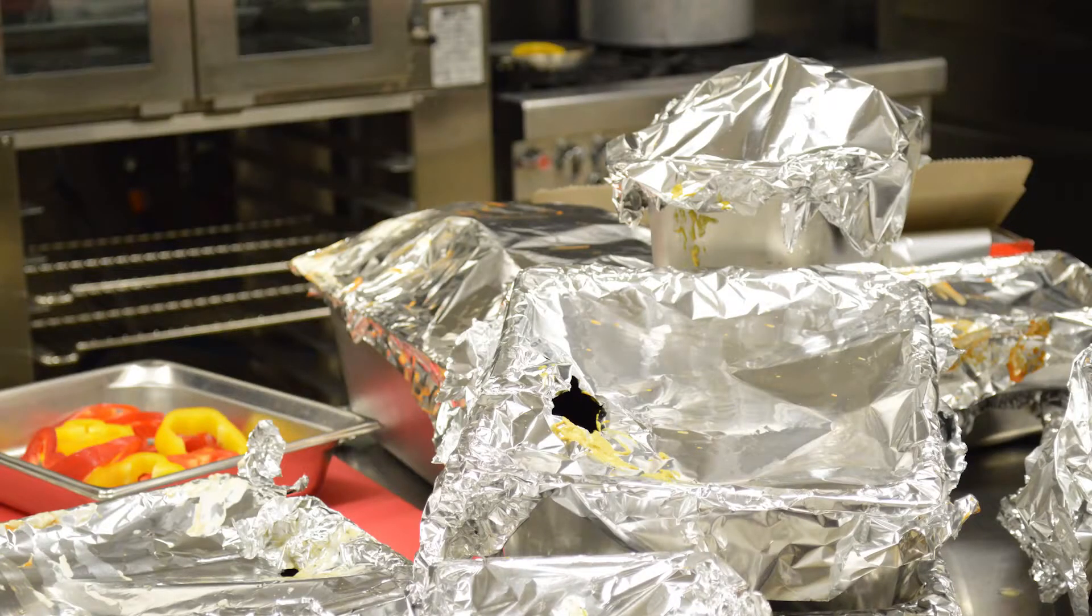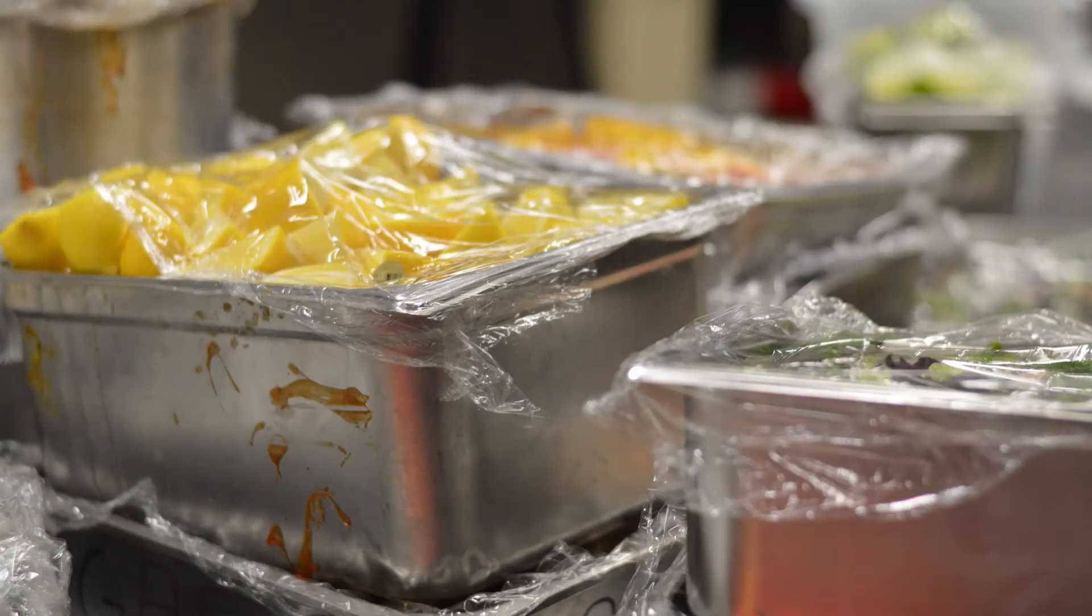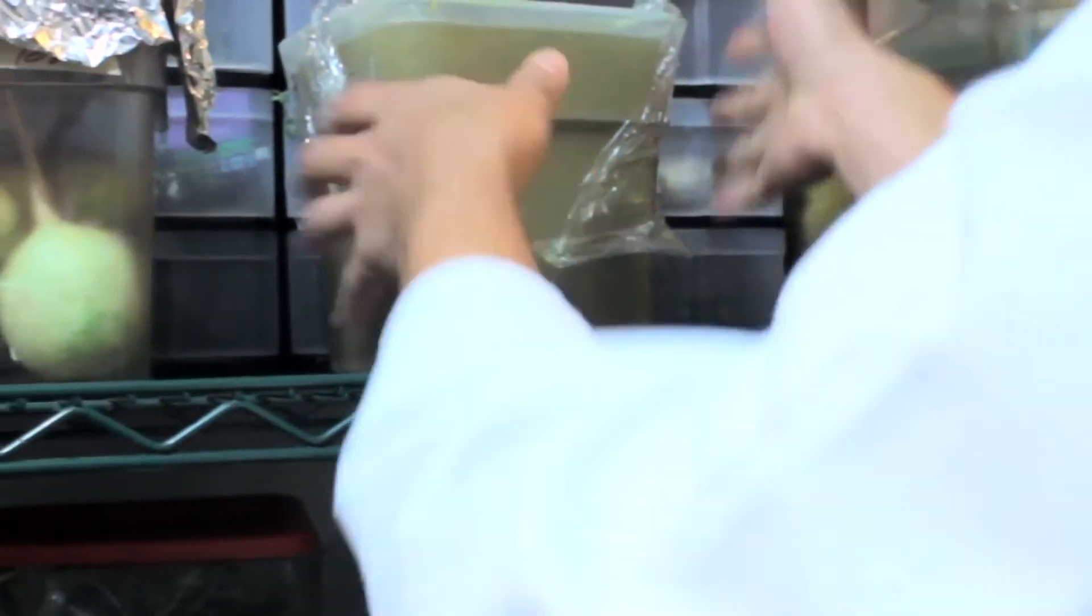When you're an inspector and you walk into a kitchen and the first thing you see are food containers with aluminum foil or saran wrap, you immediately go on alert for concerns about cross-contamination and dripping of product.